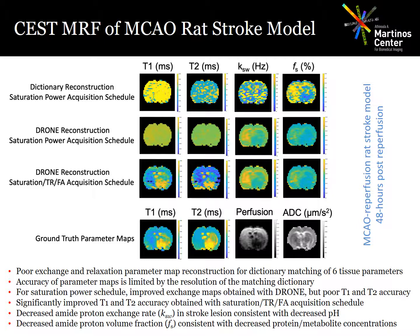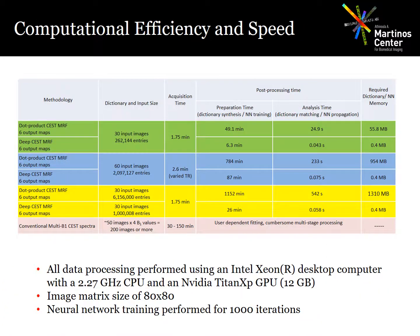Some interesting features of the maps obtained are the decreased amide proton exchange rate in the stroke lesion, which is consistent with a pH reduction, and the decreased proton volume fractions consistent with decreased metabolite concentrations. In a side-by-side comparison between the neural network reconstruction of the CEST MRF data and traditional dictionary matching, for a schedule length of 30 with a dictionary of about 200,000 entries, the neural network preparation time was about eight times smaller and the reconstruction time was almost 600 times smaller. With a longer schedule of 60 images and a larger dictionary of 2 million entries, the preparation time was nine times smaller, but the analysis time was 3,000 times smaller.